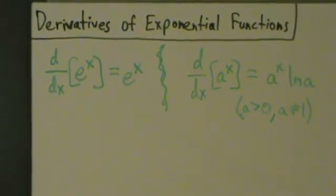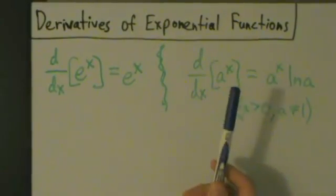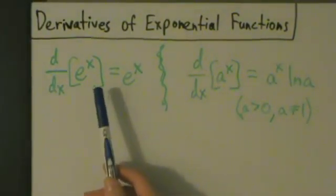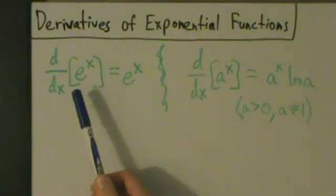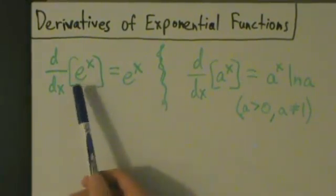Now we're ready to start talking about the derivatives of exponential functions, so that's stuff like e to the x. Remember, e is that number 2.7182818...